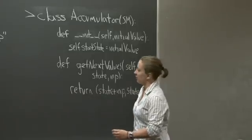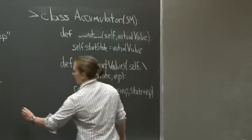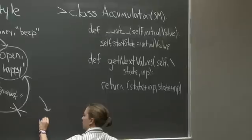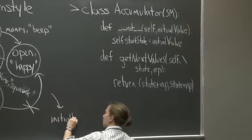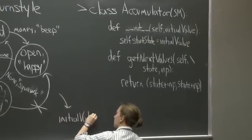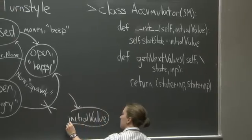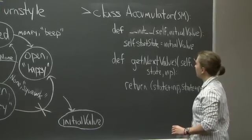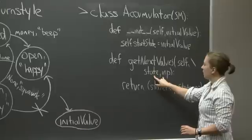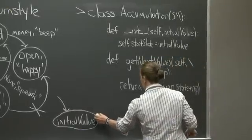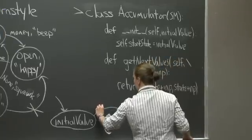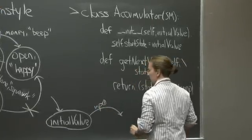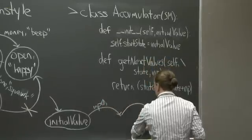If I were to draw this accumulator as a state transition diagram, I would do this. My start state is the initial value. If I pass in a new input, we'll call it input zero.